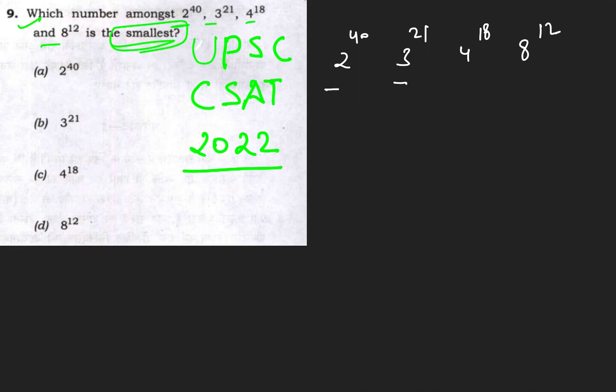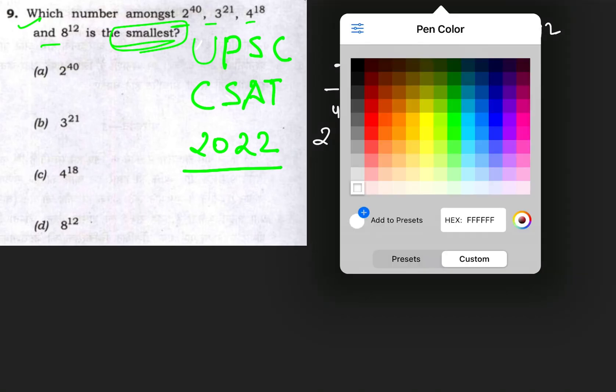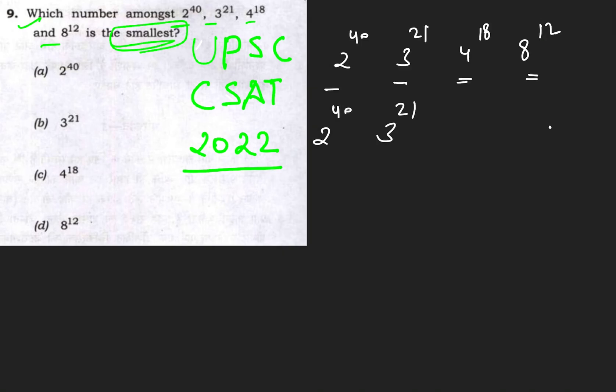First, simplify using the smallest prime number 2. Convert 4 into 2 to the power 2, so 4^18 becomes (2^2)^18 = 2^36. Then convert 8 into 2 to the power 3, so 8^12 becomes (2^3)^12 = 2^36.